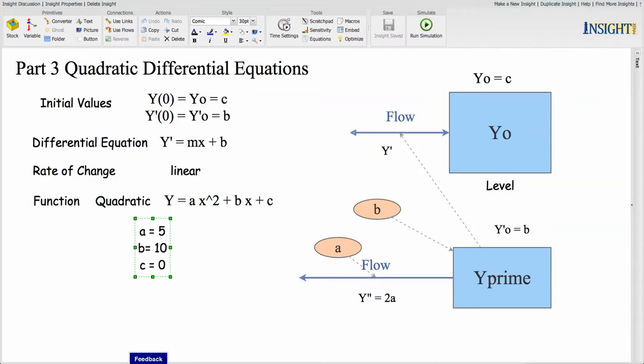This will be similar to what we looked at in part two and part three, where we had the initial value of y sub zero equal to zero. And then we can make it more complicated.